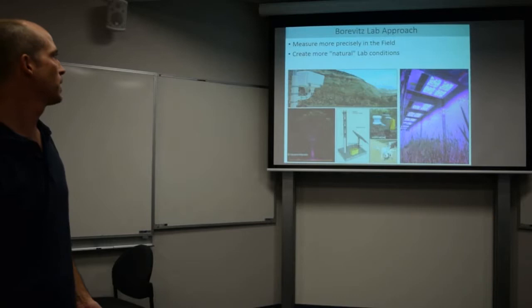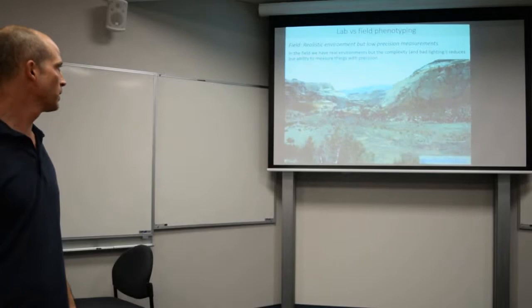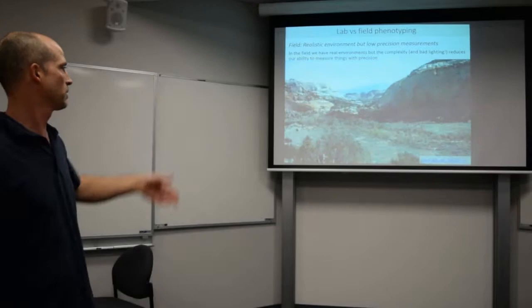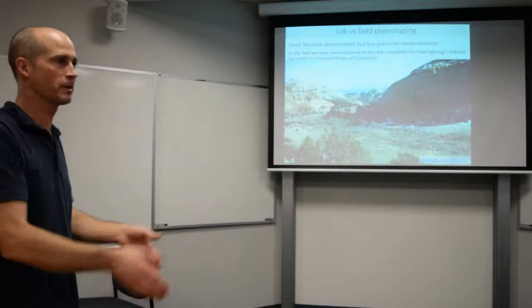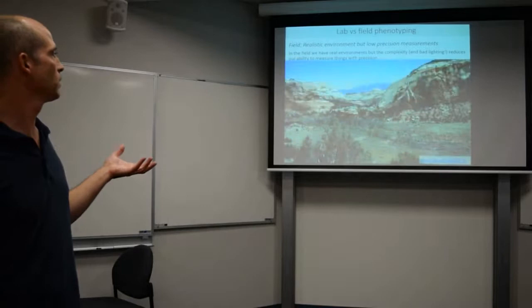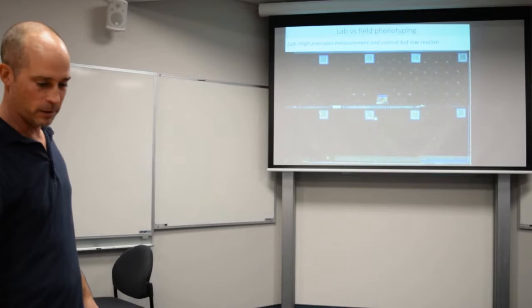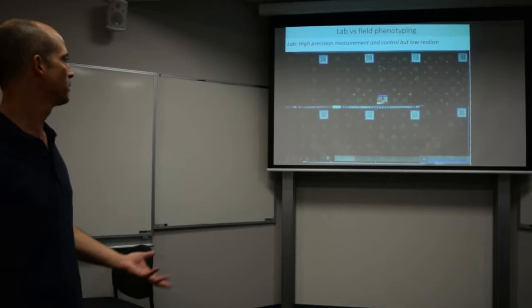What we do in the lab is we try and measure stuff more precisely, and in the field we try and make more natural lab conditions. The field is the real world, which means it's really variable. You can see the crazy lighting here, the camera drops out right when fall happens. One problem is you can monitor for an entire year, and right when fall happens your camera dies and you lose the only useful data point in the whole dataset. But in the field we can measure things with low complexity but in a realistic environment. Whereas in the lab we have highly controlled growth conditions but very low realism.